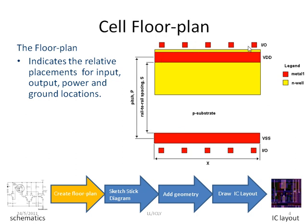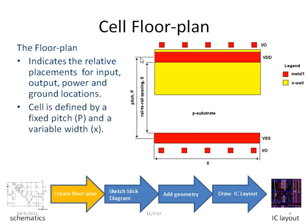The floor plan also indicates where you are going to place your power and your ground bus. The cells are defined by the pitch — the fixed pitch — and the variable width X. The pitch is measured from the midway point of the ground line to the midway point of the power line. The pitch is fixed but the width is varied depending on the function of the cell.